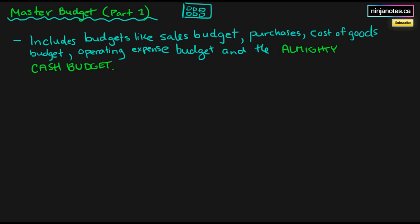What are these different types of budgets? The sales budget essentially differentiates between how much credit and cash sales we have. The purchases budget shows how much we are spending on our goods, how much ending inventory we have, and how much beginning inventory we have. The cost of goods sold budget has to do with how much we are putting out for the production of our goods. The operating expense budget includes different expenses like wages, commissions, rent, insurance, and amortization.